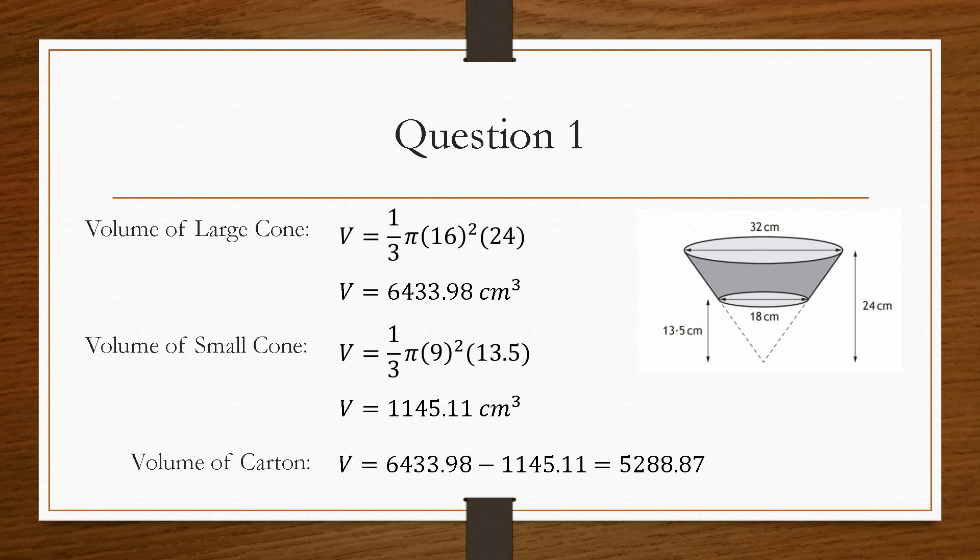Now, the question asks us to round to two significant figures. So we'll round that to 5300 centimetres cubed. And that's how you would go about solving harder volume questions of composite shapes.